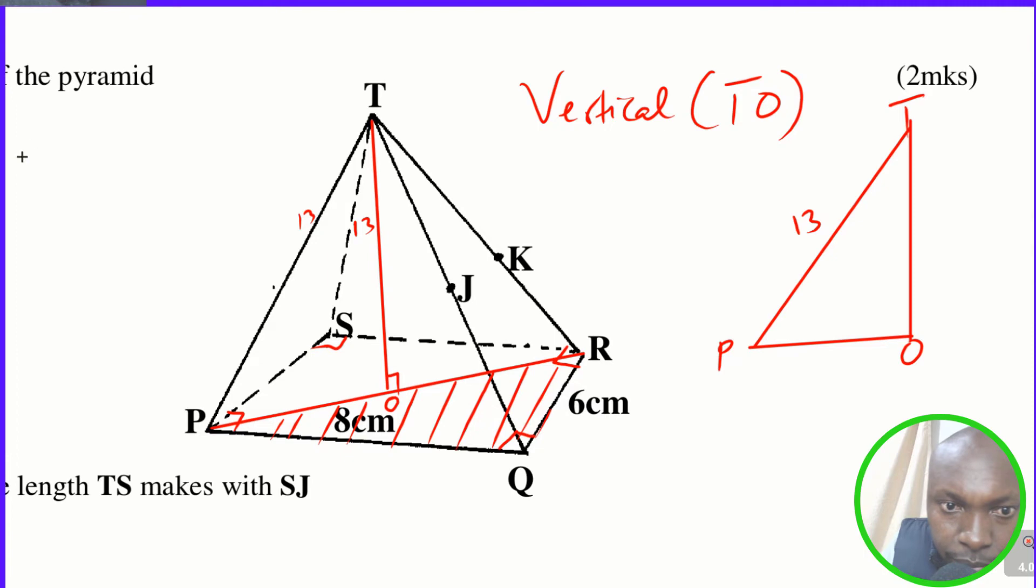And PR will be obtained by using Pythagorean theorem. And that one will be given by 8 squared plus 6 squared, the square root of everything. So this is how we get considering triangle PQR. That one is a right angle triangle, measurements 8 and 6. So PR is the diagonal and that is the hypotenuse. So this will give the root of 100. Therefore, PR will be 10 centimeters.